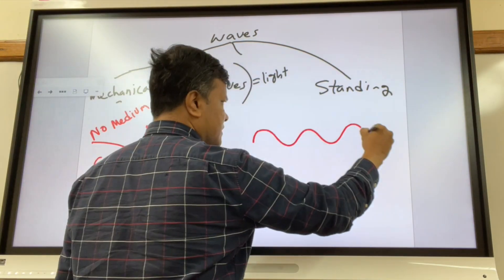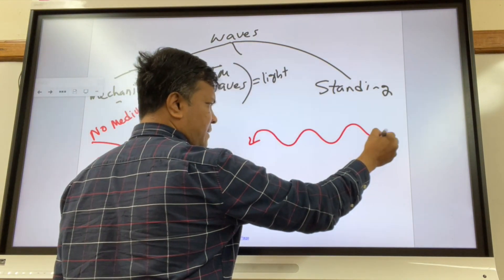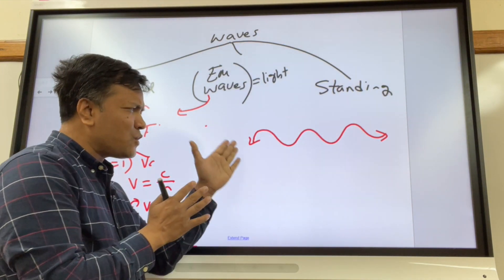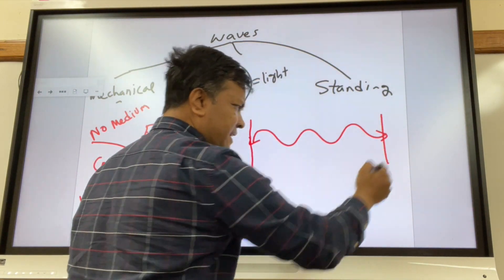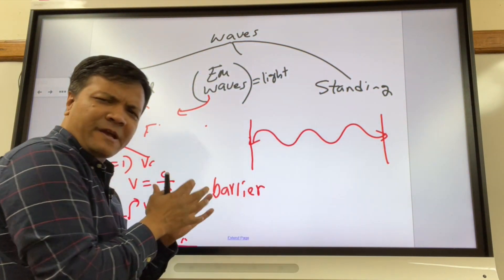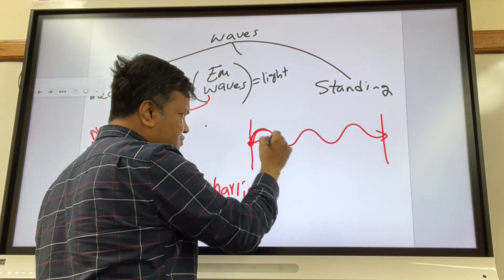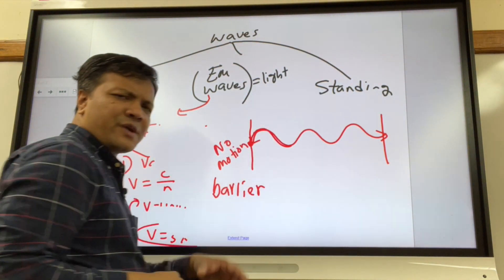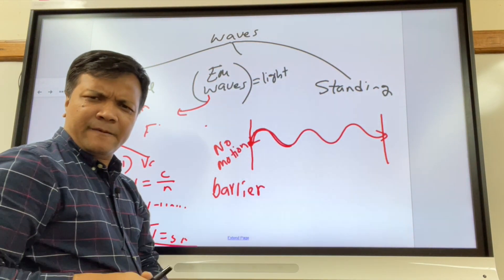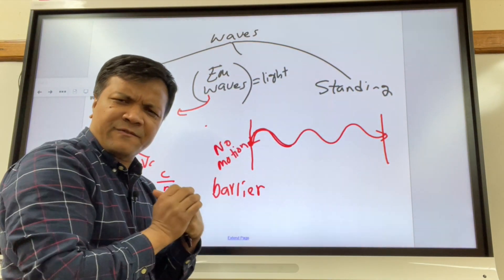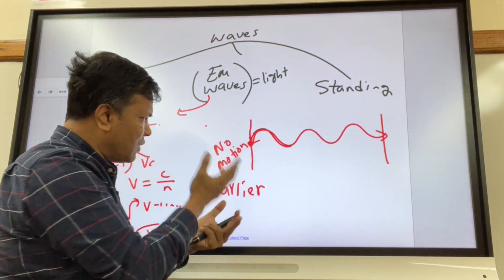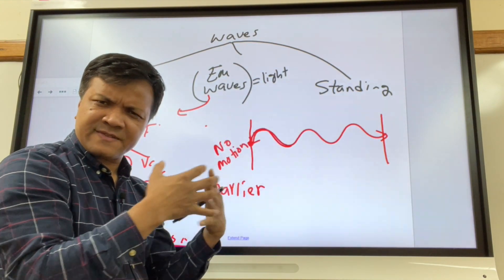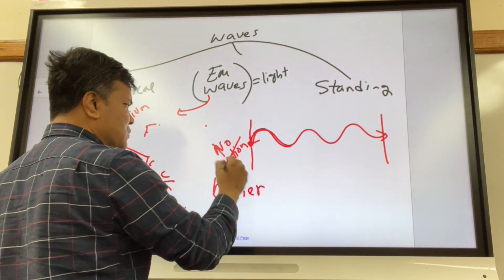Now we're going to talk about standing waves. Unlike a regular wave which has no beginning or end, a standing wave has a beginning and an end. If we put a barrier at both ends, we create a standing wave because at the barrier the string does not move. We call this point of no motion a node — a term proposed by the music industry, which physicists accepted.